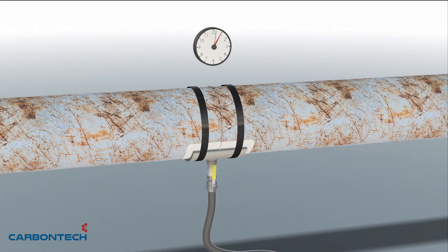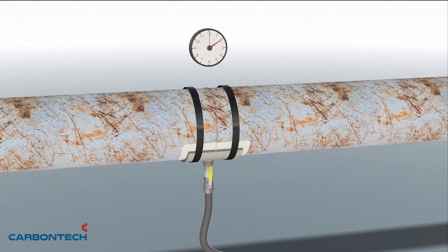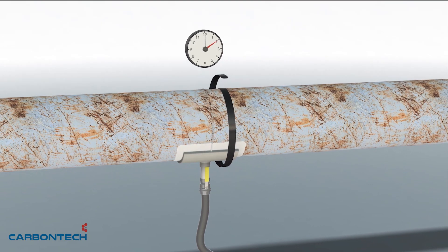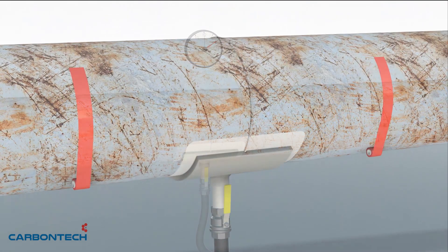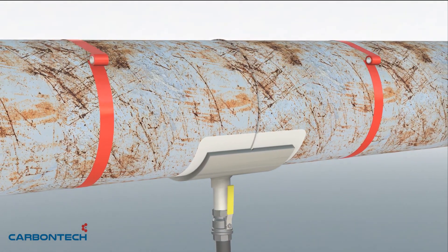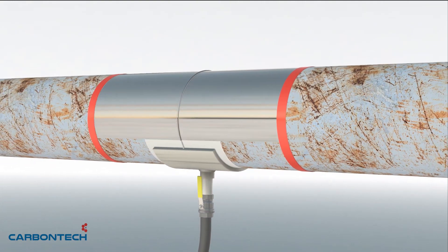After the RevoSteel Adhesive is cured, the RevoStraps may be removed to allow for surface preparation. The repair area is demarcated and surface preparation may safely continue for the overwrap.